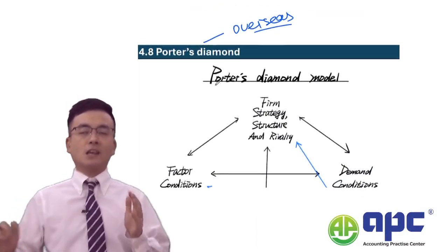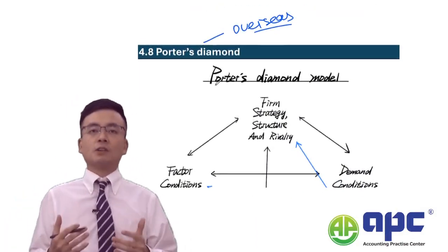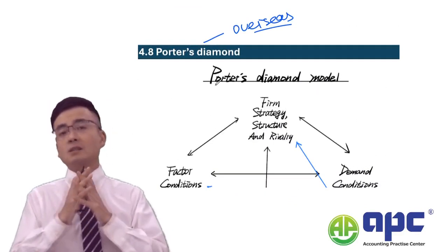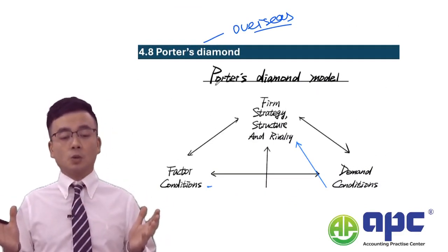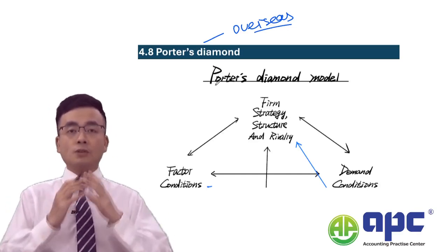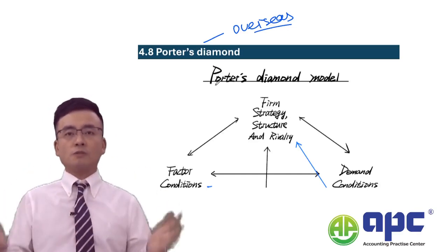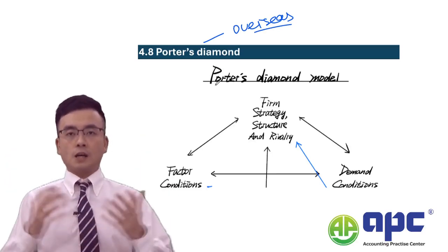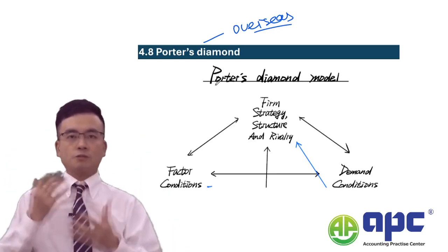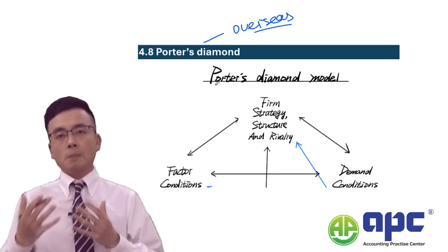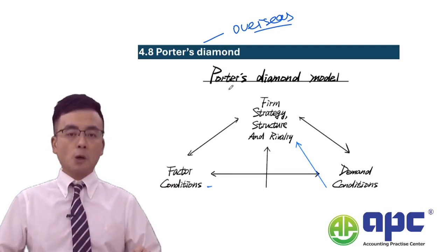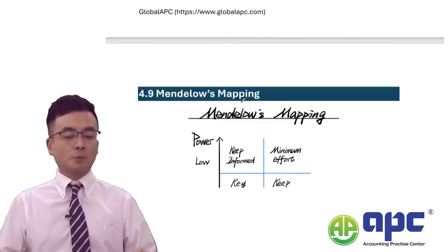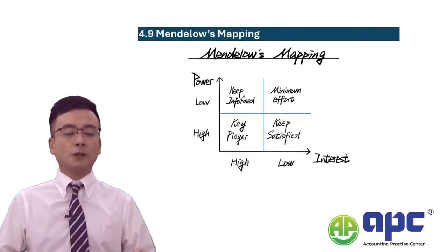The SCS exam questions will be relatively open — there will be nearly no single correct answer. When asked about the ecosystems you're operating in or the overseas market and what factors to consider, make sure you get ideas from these models by integrating them all together, and that will be absolutely fine.